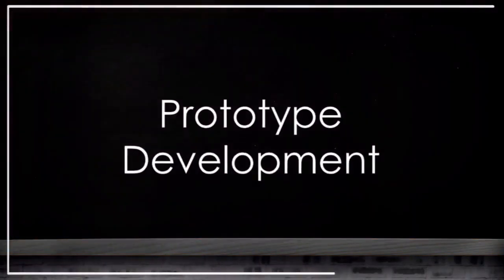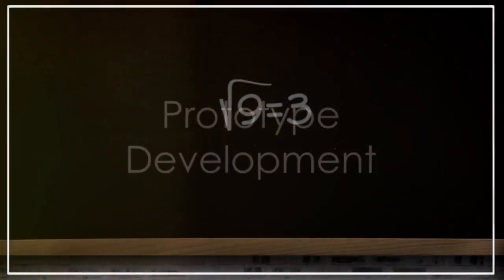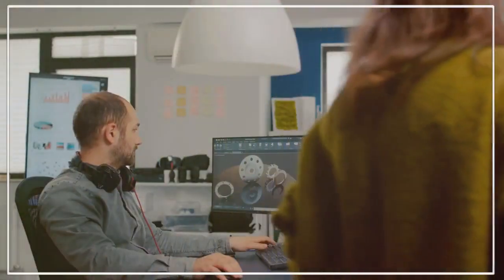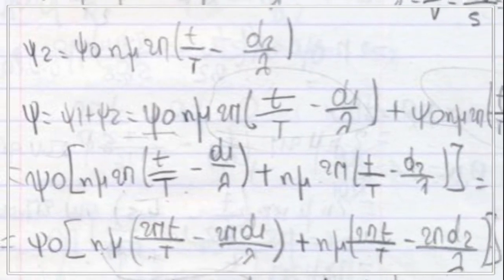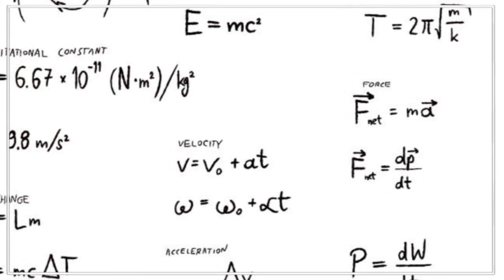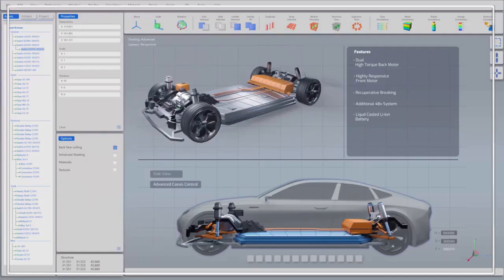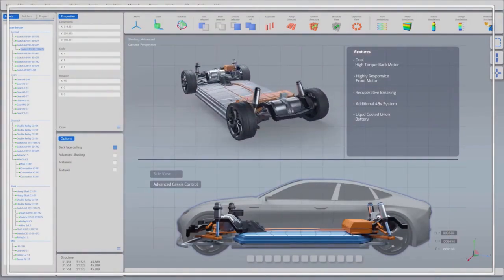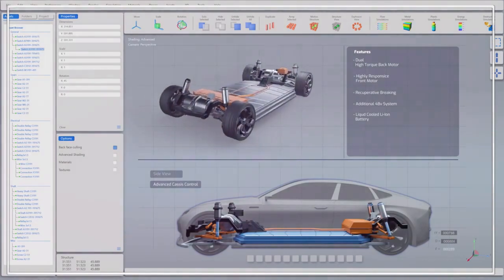In prototype development, we begin with design and fabrication. This process uses computational fluid dynamics and finite element analysis. The guiding equations here are the Navier-Stokes equations and Maxwell's equations. The methodology involves designing and fabricating prototypes using CAD tools, simulating fluid flow and electromagnetic behavior.